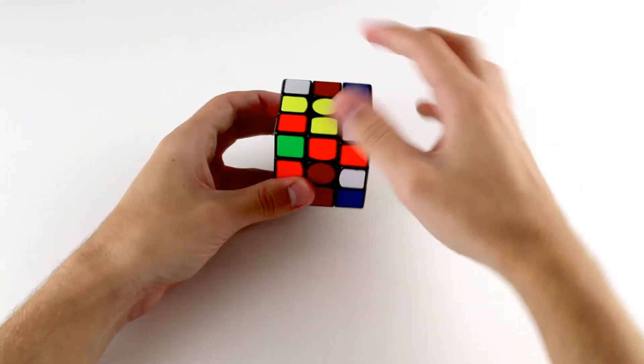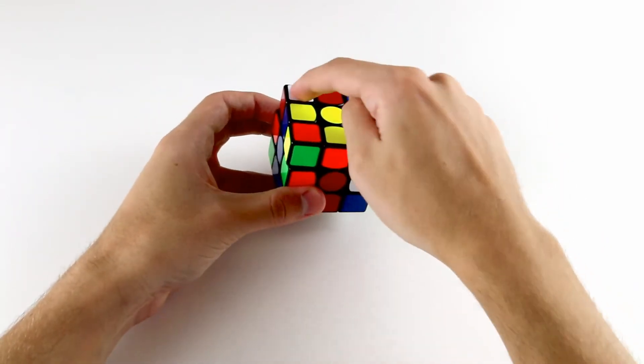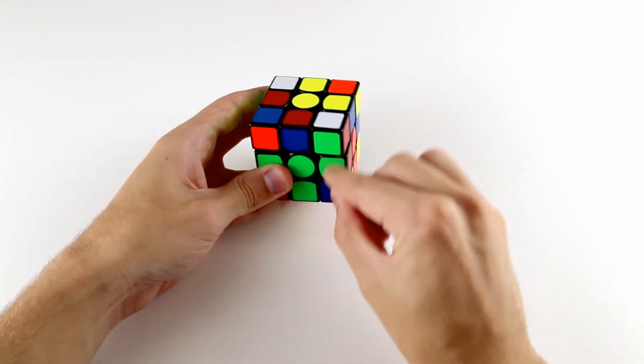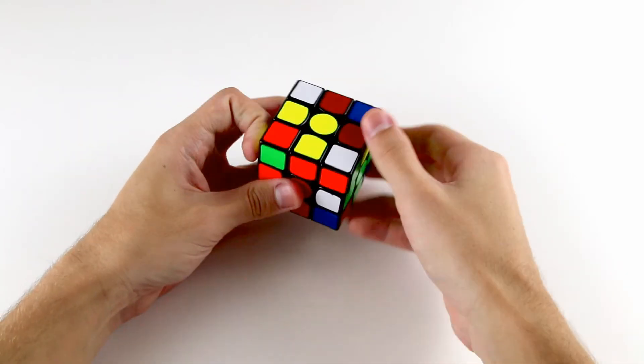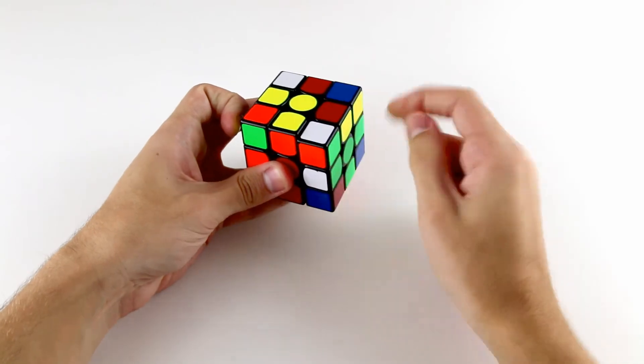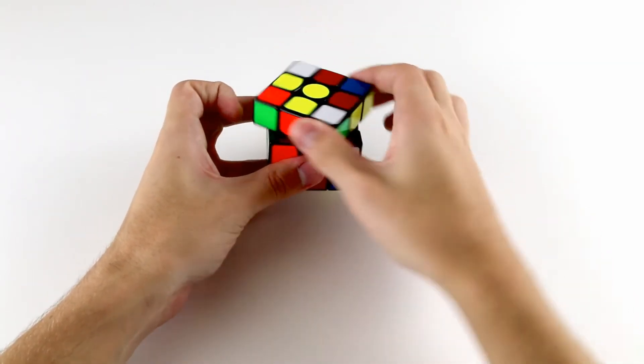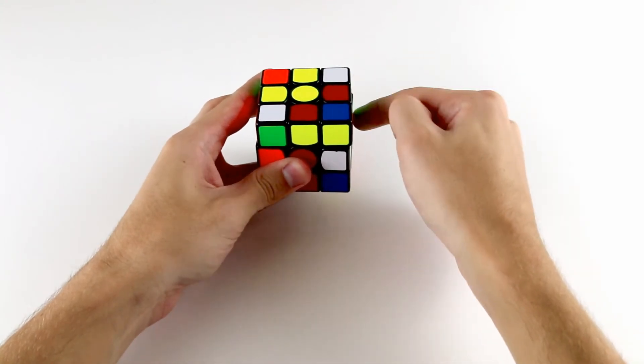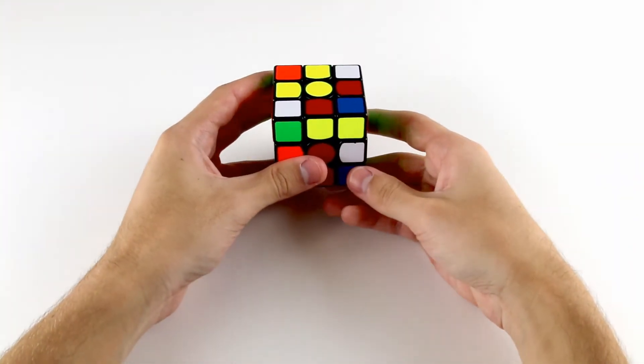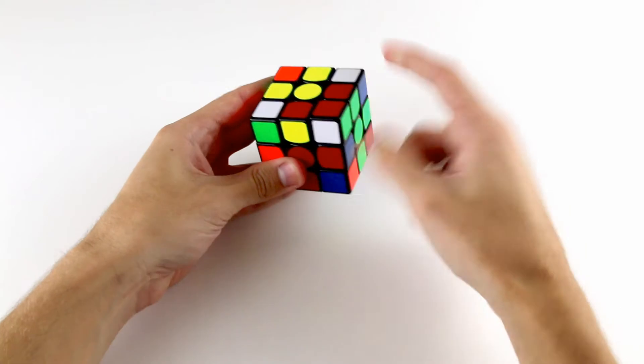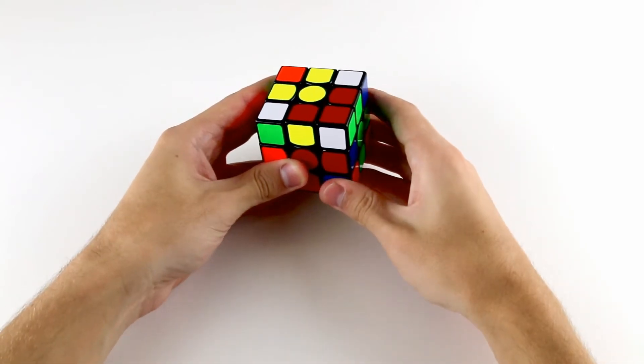Then what we do is, using the top layer, we rotate the corner directly above where that edge piece is. We hid the edge piece in the back here. We want to solve this corner piece, so we bring it directly on top. After we do that, we bring the edge piece back into the top layer, and the edge and corner piece will be matching.